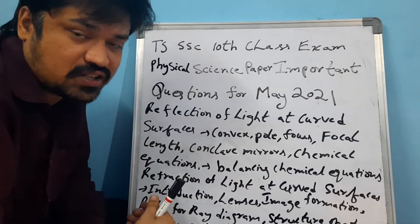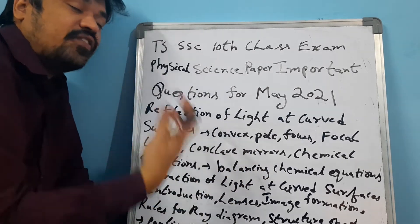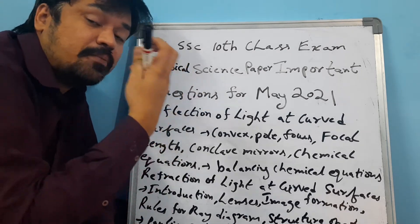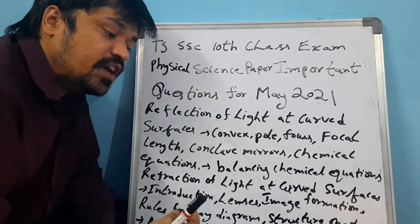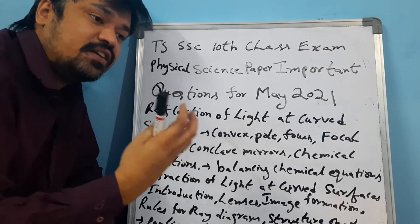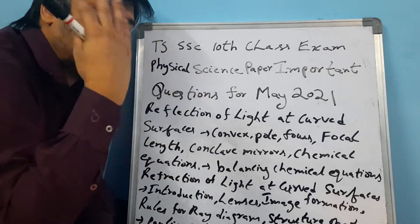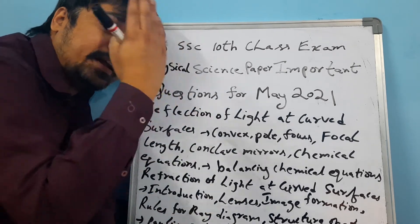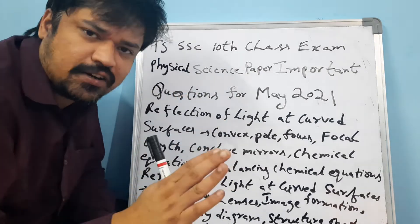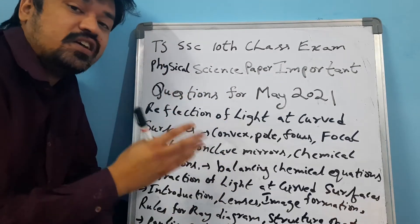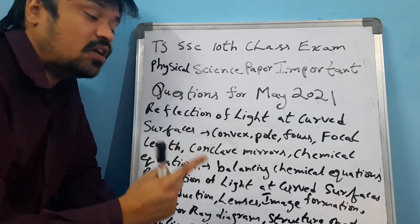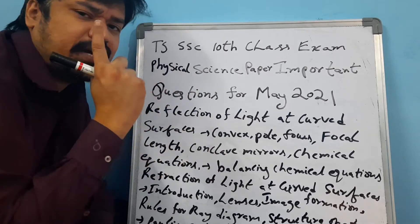Students should be able to understand the meaning of the question. What is the definition of convex, pole, concave mirrors, chemical equations — you should know the meaning of each. If you understand the meaning and concept of the answer, it will be very easy to write in a public examination and get good marks without any doubt. I suggest each and every student to understand the meaning and concept of each and every topic.